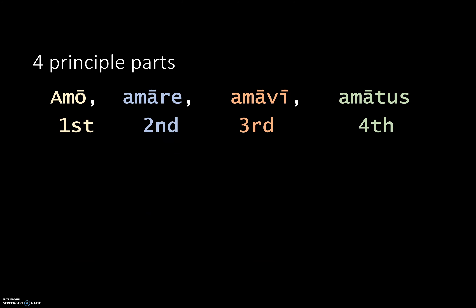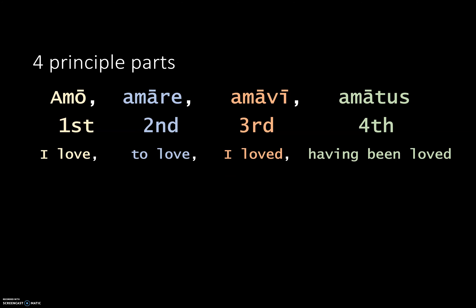Every regular verb in Latin has four principal parts. It is important to know all of them because each is used for specific reasons. The first principal part is always the present active indicative first person singular — 'I verb.' The second is the infinitive — 'to verb.' The third is the perfect active indicative first person singular — 'I verbed.' The fourth is the perfect passive participle — 'having been verbed.'